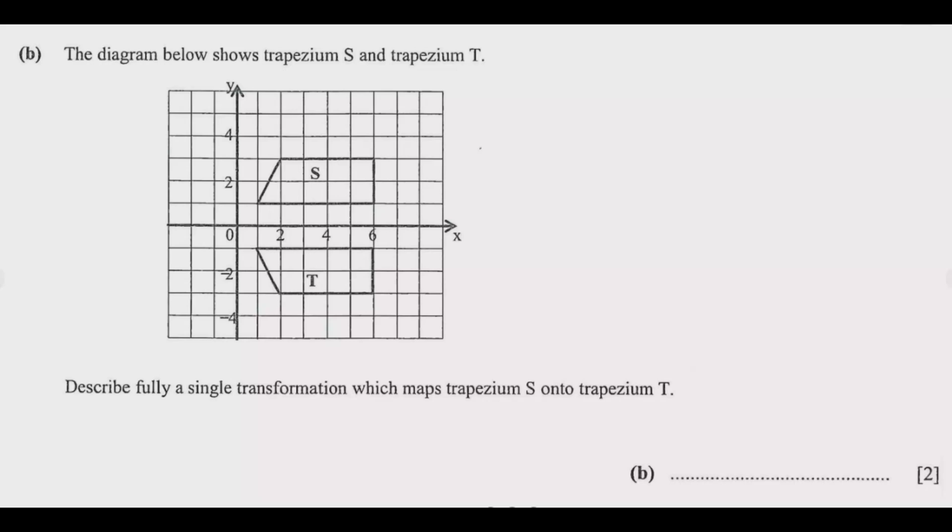It is transformation. The first thing we need to ask ourselves is: are the areas of these two shapes maintained? If they are maintained, then it's not enlargement, it's not a stretch. That's the first thing. So we eliminate those out.